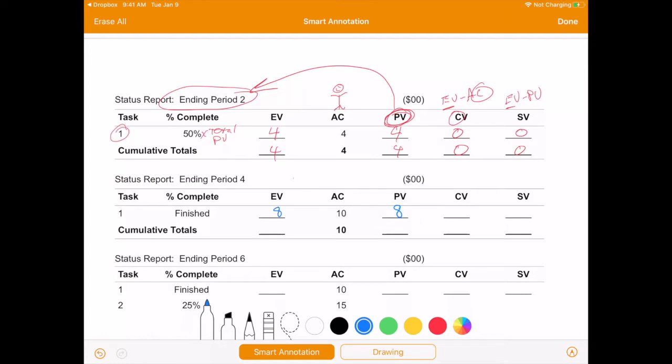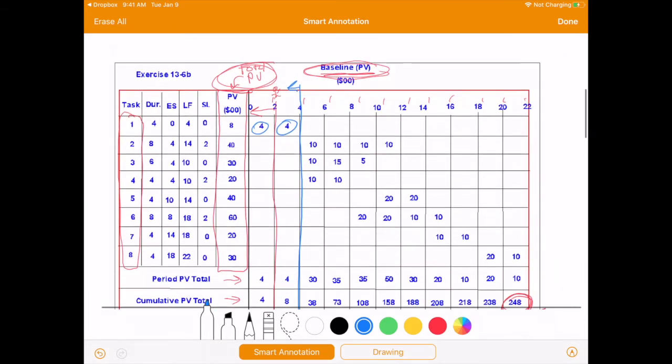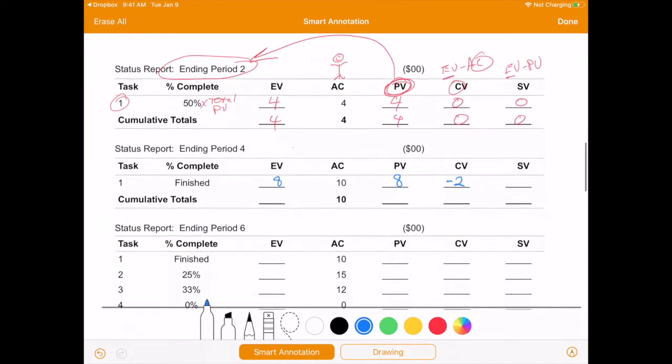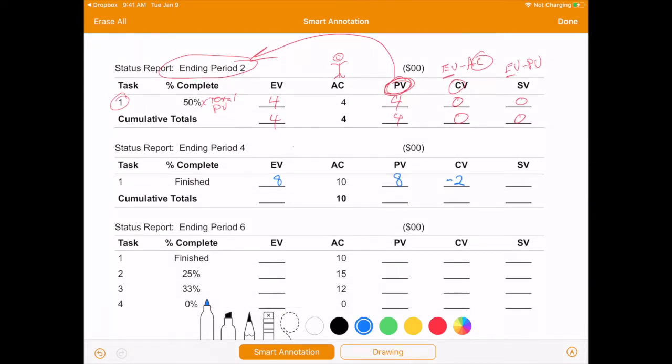So now if we look at these calculations, 8 minus 10 is a negative 2. So that means that we are over budget by $200. And in terms of schedule, we appear to be on schedule. One caveat or warning about schedule variance. We are using money to measure time. So there are some problems with this. And you can watch one of the other videos that talks about what that problem is. So in terms of cost, we're not doing so well. In terms of schedule, it looks like we're doing all right, at least by this metric.